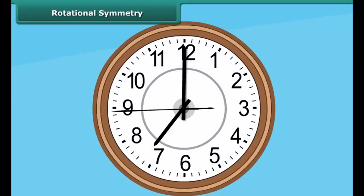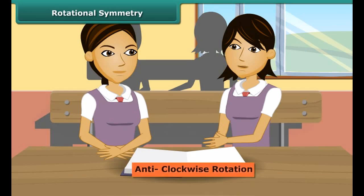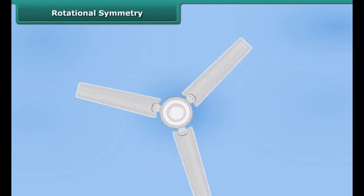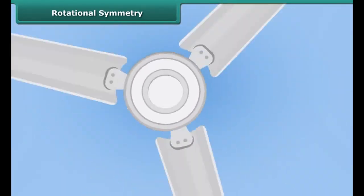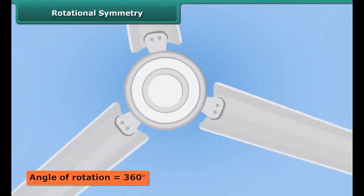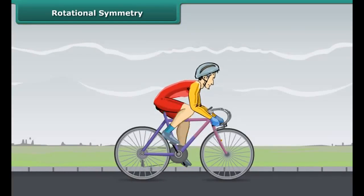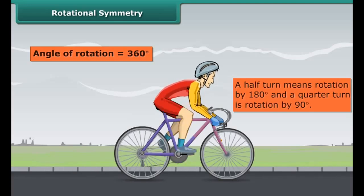Now look at this clock. It's going round and round, which means it is rotating. The hands of the clock rotate in a clockwise rotation. And when something rotates other than clockwise, then we call that rotation as anti-clockwise rotation. When an object rotates, its shape and size do not change. This rotation turns an object about a fixed point, called the center of rotation. The angle of turning during the rotation is called the angle of rotation. A full turn has an angle of rotation of 360 degrees, a half turn means rotation by 180 degrees, and a quarter turn is rotation by 90 degrees.